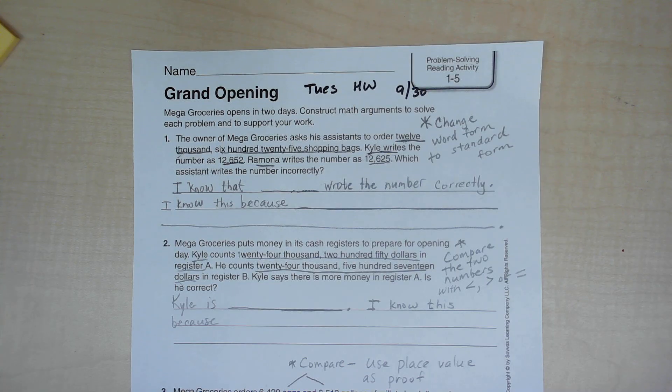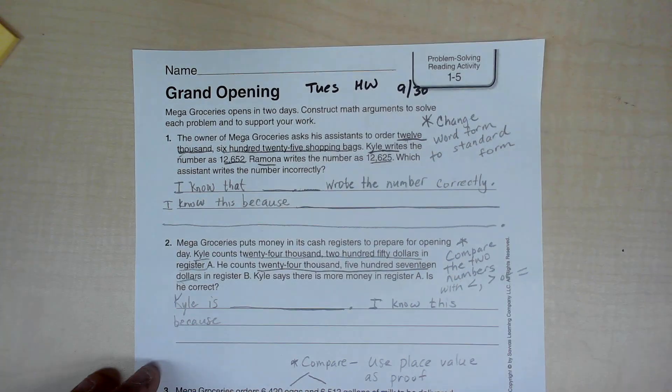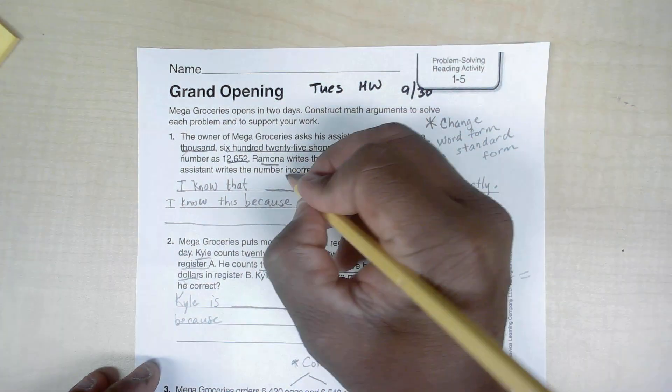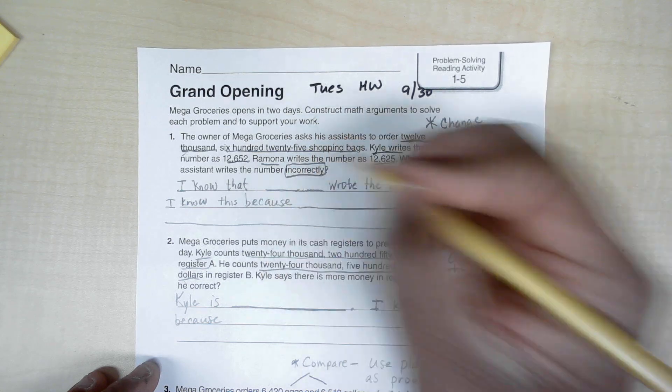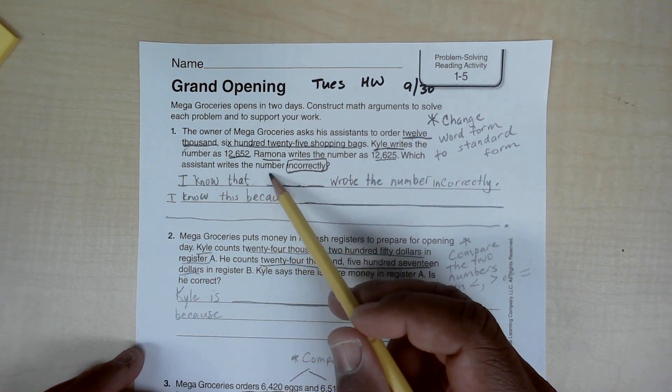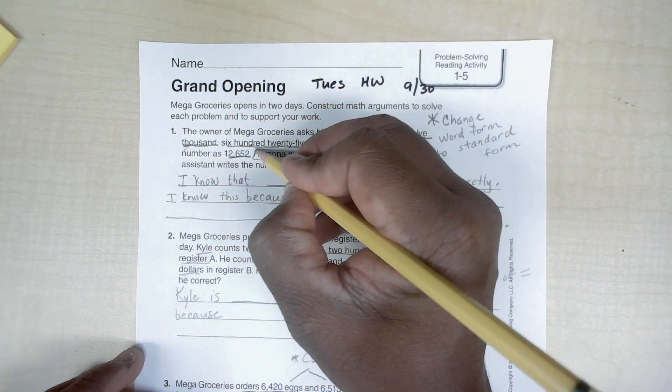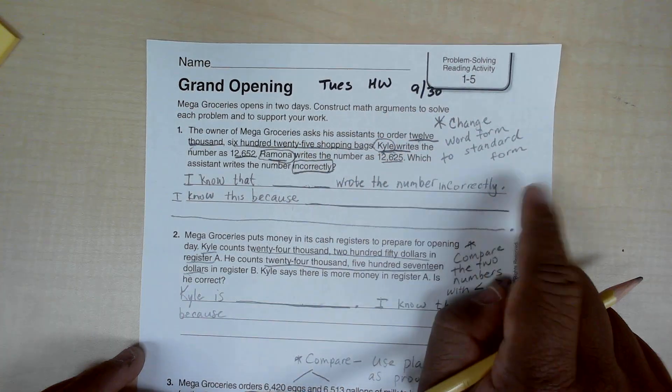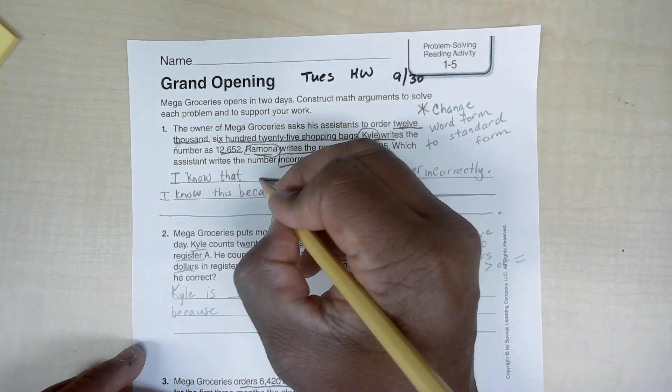Which assistant writes the number incorrectly? So which number is incorrect? You have to pick the name of the person - it's either Ramona or Kyle who wrote the number incorrectly. You fill that in this space here.